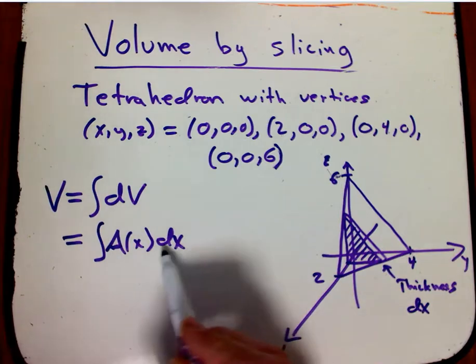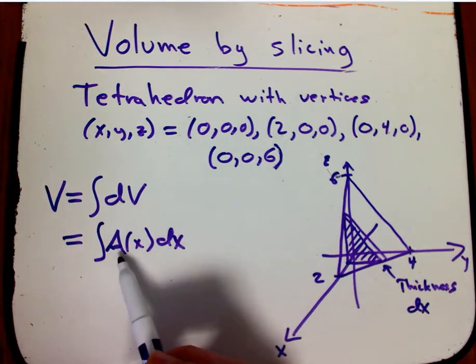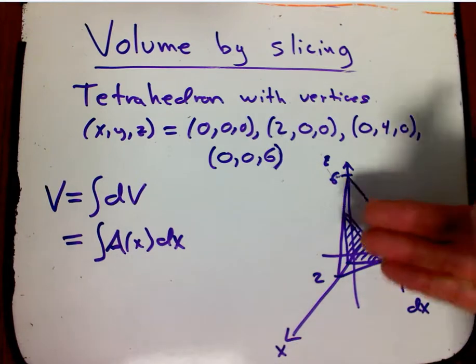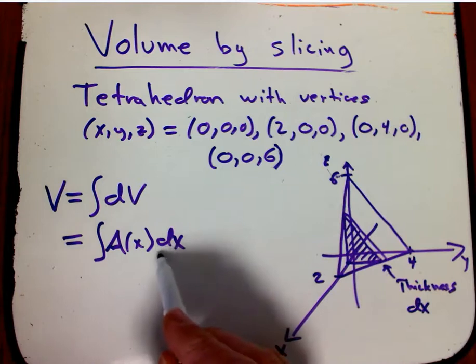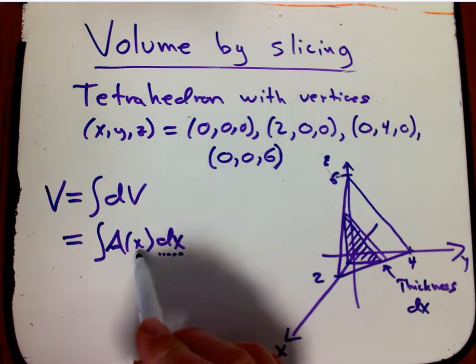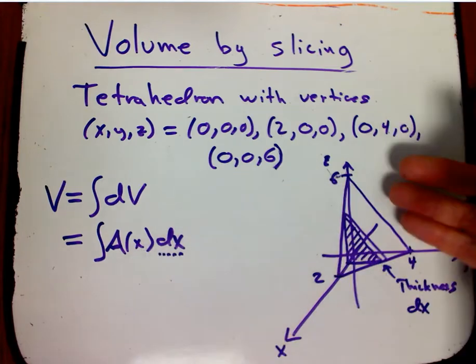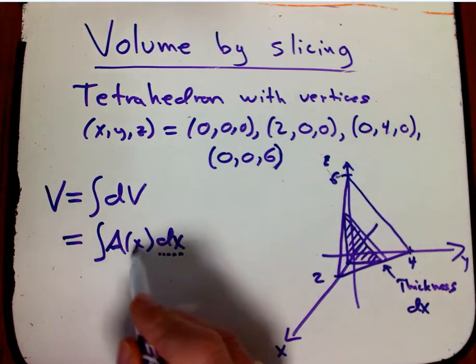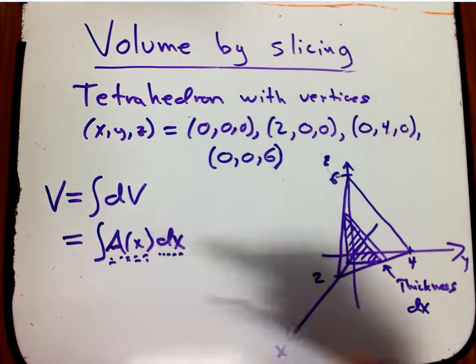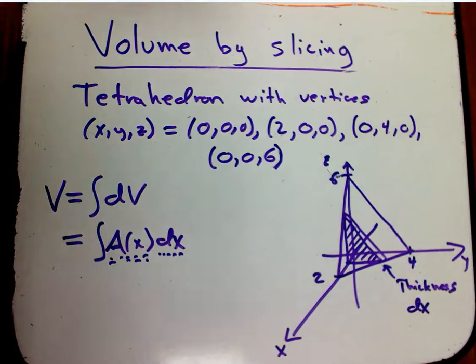So we've chosen a variable to slice it up with. We've chosen slices perpendicular to the x-axis. That means dx is our thickness. That means x is going to label which slice is which. It's kind of a bookkeeping device. And then A(x) is something we still need to calculate explicitly, which is the cross-sectional area of each slice.